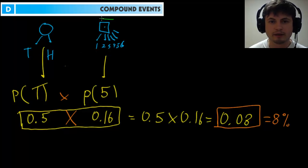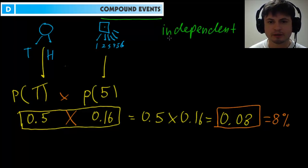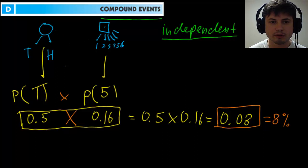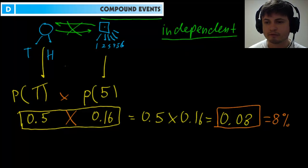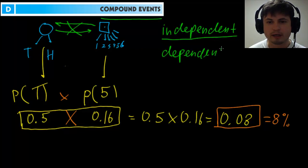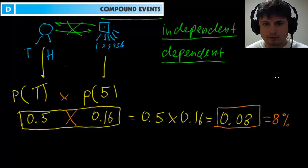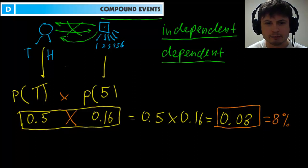There are actually two types of compound events. The first is called independent events — the coin-and-die example is an independent event, where two events occur independently of each other and don't influence one another. The second type is called dependent events, where one event influences the other. We'll look at that in a moment, but first let's see another independent event example.